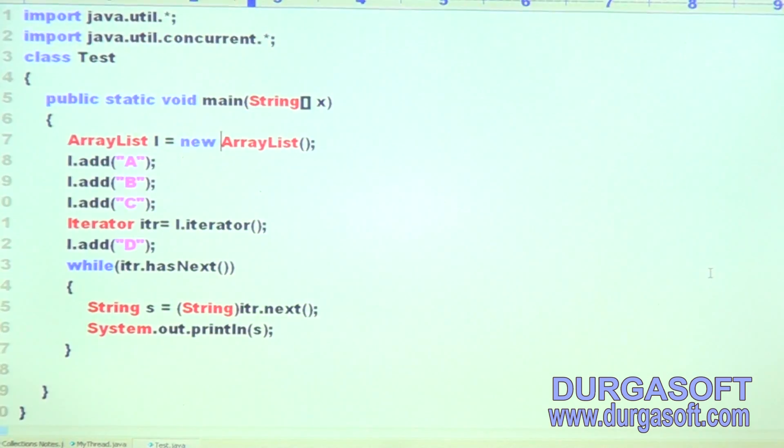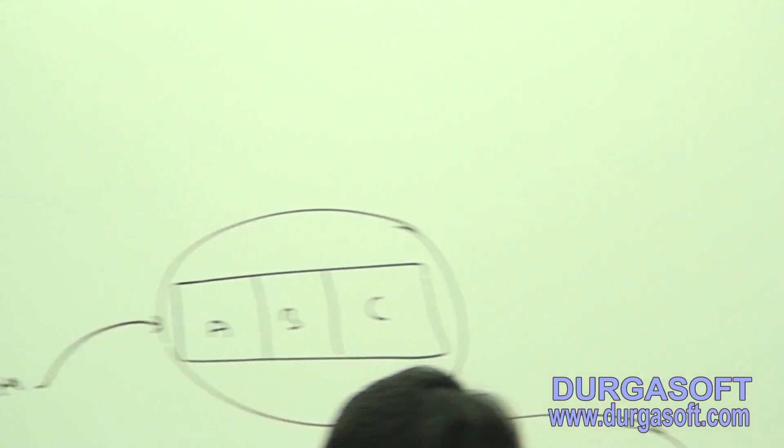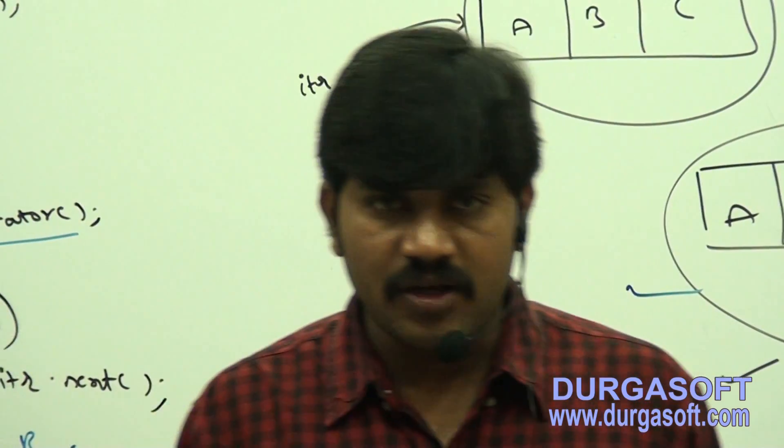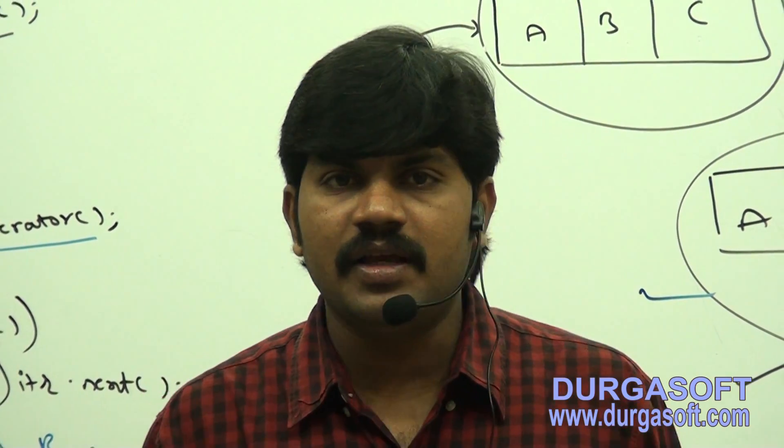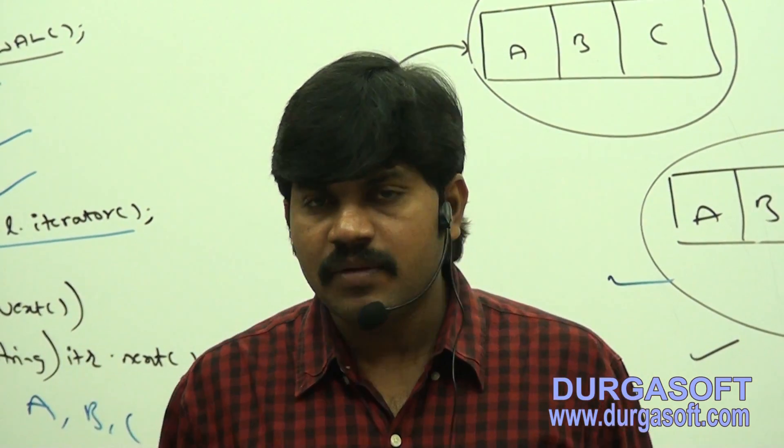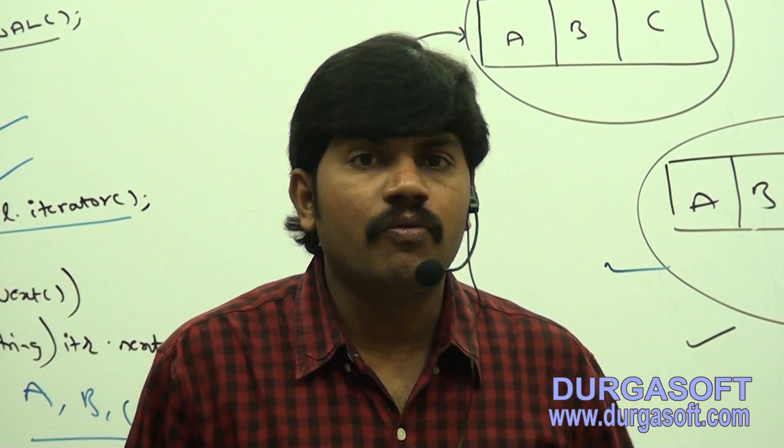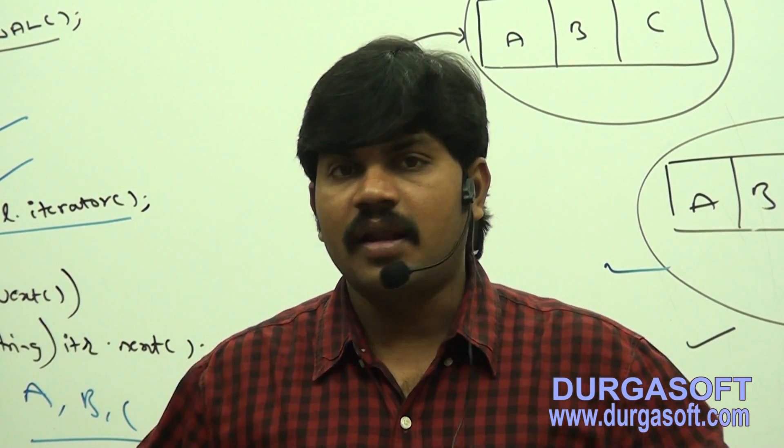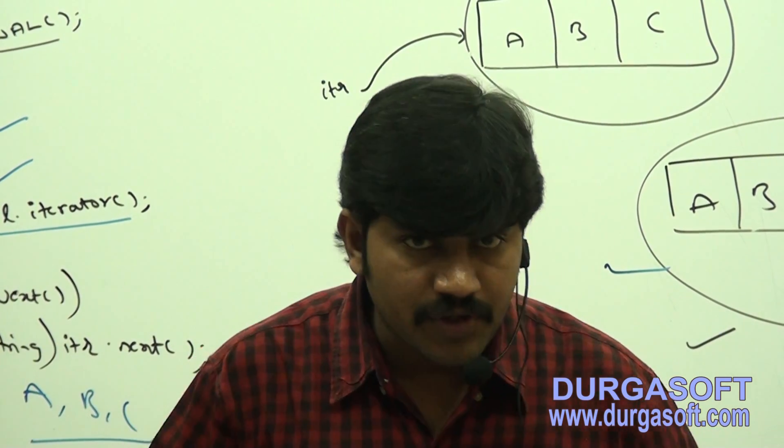That's all. These are the things what you people should be aware about CopyOnWriteArrayList. Are you able to understand that programmatically, what is CopyOnWriteArrayList? Next, what is about ConcurrentModificationException? What is about iterator behavior? Like, the terminology is very clear for you, right? That's all.